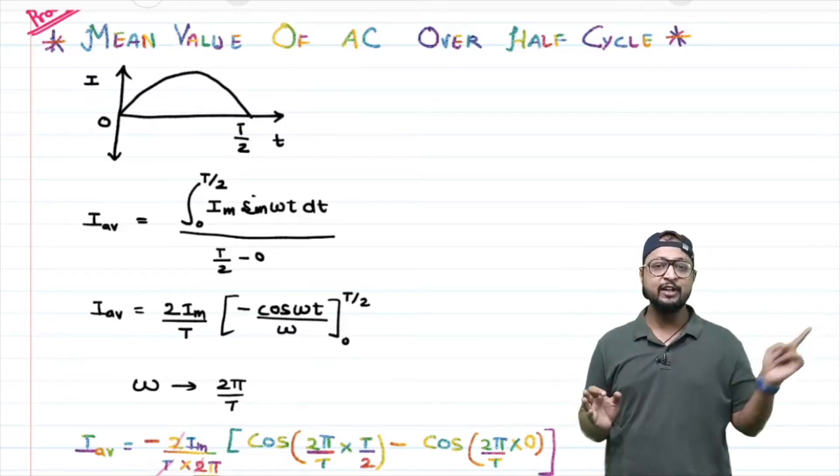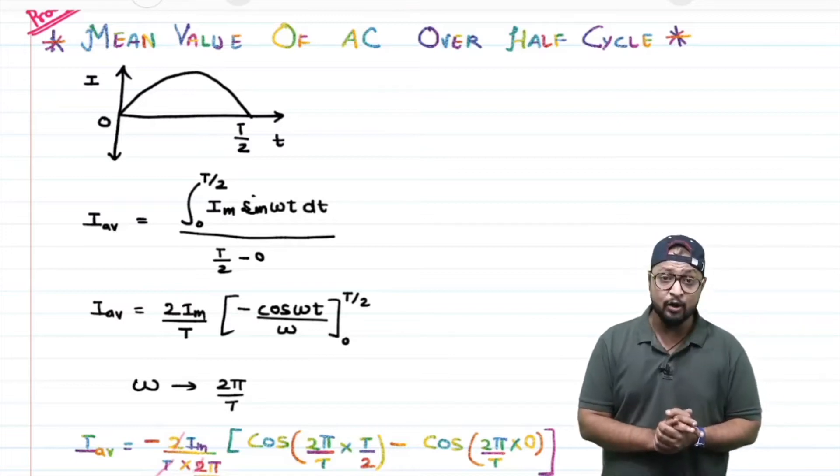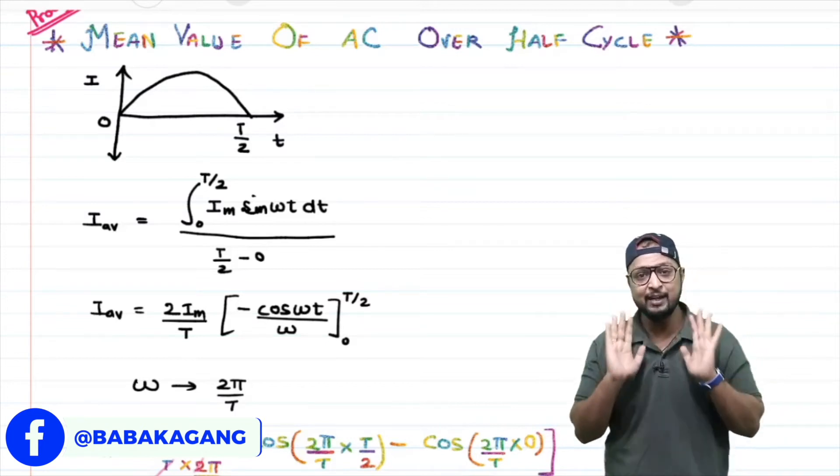The last video showed it was zero. But for the half cycle, what will be the value? Because it will be either positive or negative. In the half, the mean value will come.